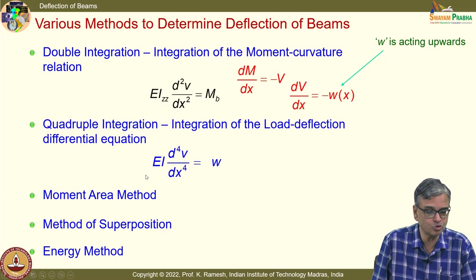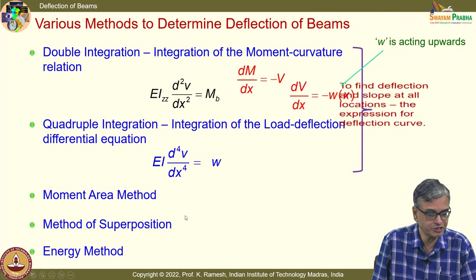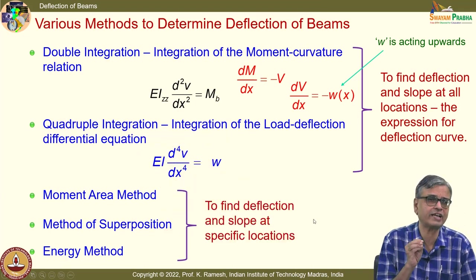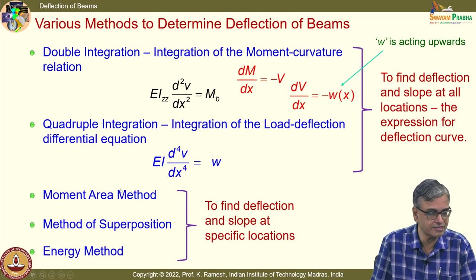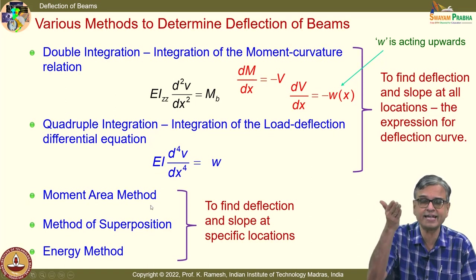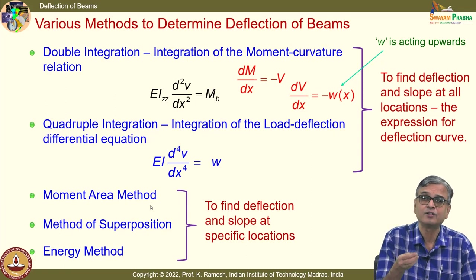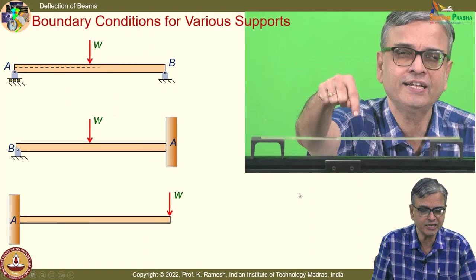We also looked at the moment area method, method of superposition, and energy method. These are applicable when you want to find deflection or slope at specific locations quickly. In the moment area method, even if EI changes you have to scale up the bending moment diagram appropriately, making it a good choice for beams of variable cross section or changing material.